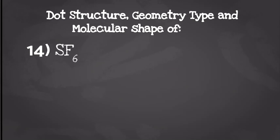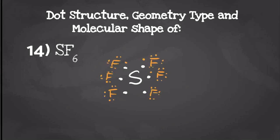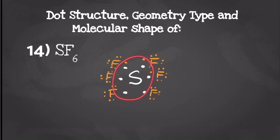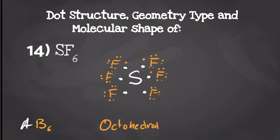Next up we have sulfur hexafluoride. Sulfur is going to have six valence electrons and each fluorine is going to have seven valence electrons, so when we draw our dot structures it should look something like this. Each fluorine is going to have eight valence electrons, and sulfur is going to have more than eight because it's in the third period and below. When we look at our geometry type, we have one center atom with six things around it — that's going to give us a geometry type of AB6, which gives us a molecular shape of octahedral.